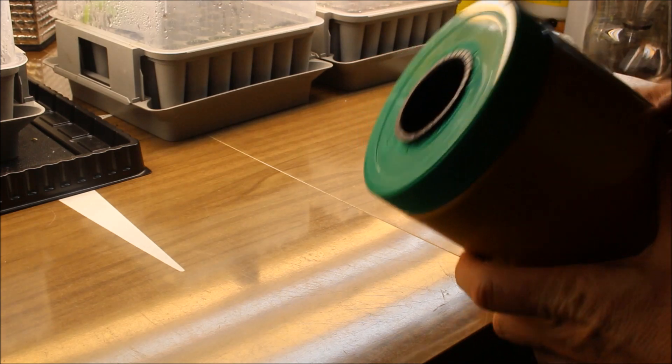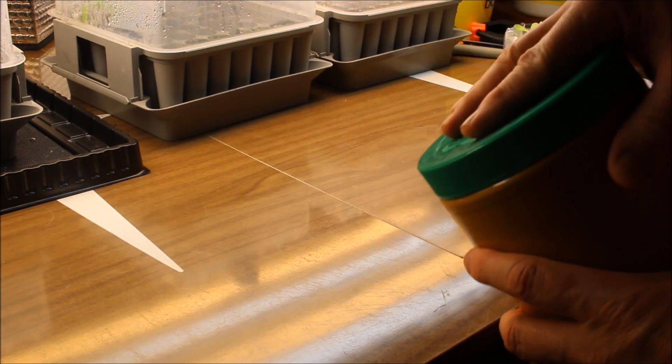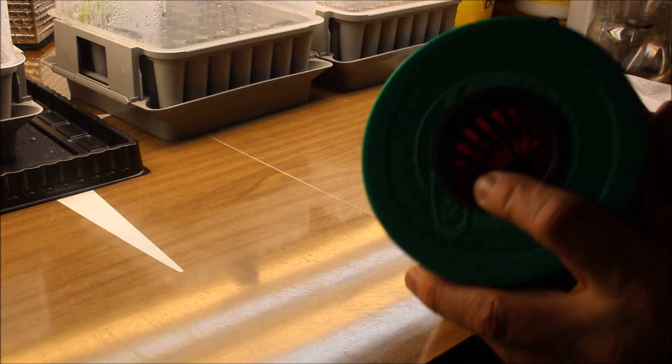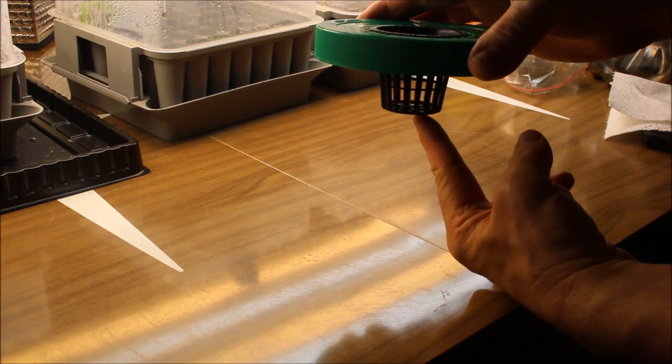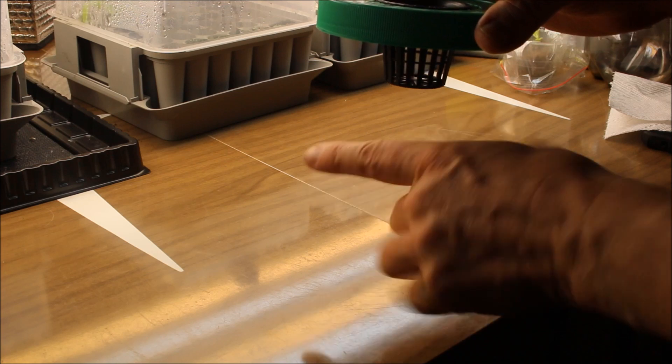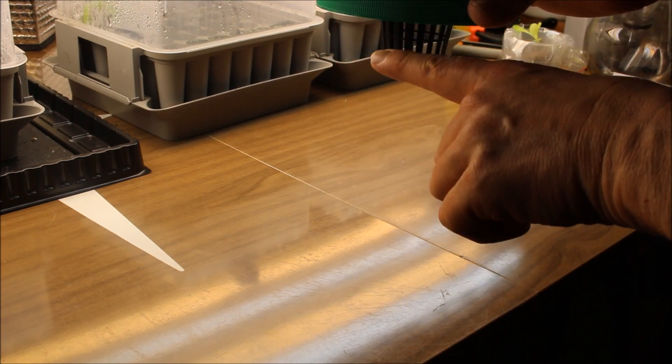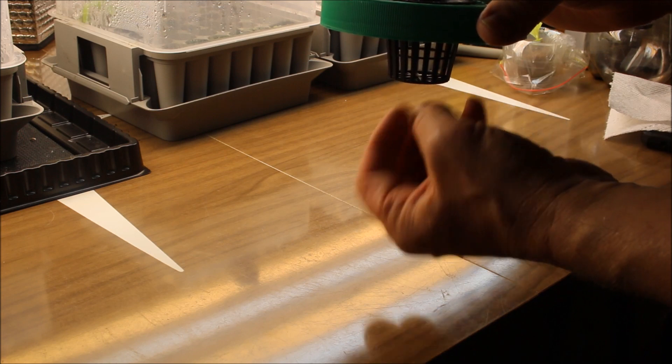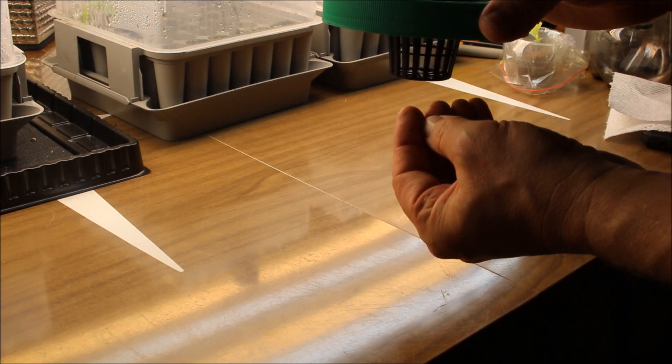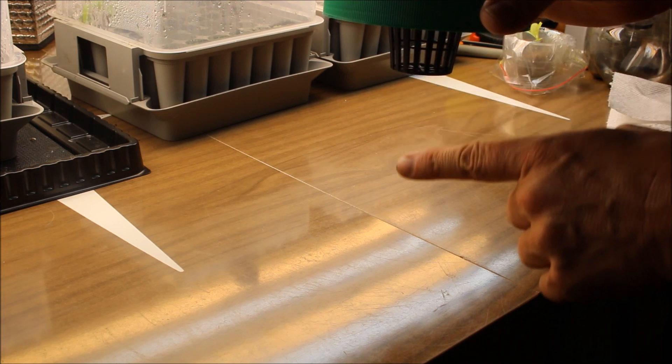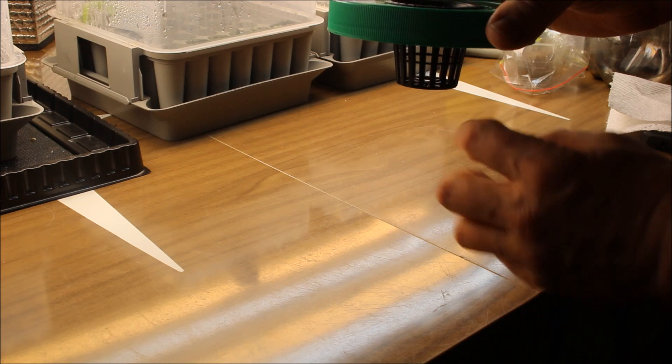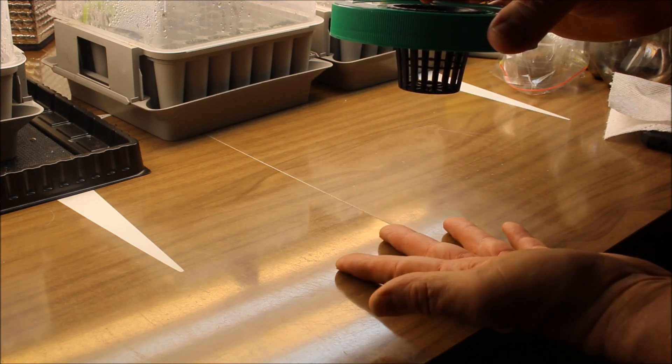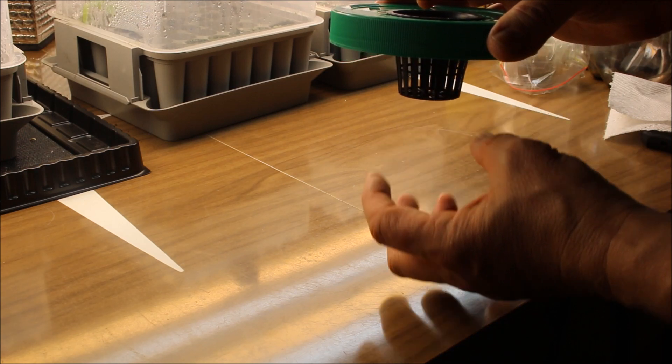Now if you've never heard of Kratky method before it's quite simple. The theory behind it is when you have your plant you fill up your reservoir to touch the bottom of the net cup. Now your level of water will be right here. Now as the plant grows it will start drying up the nutrient from the container. And as the nutrient level goes down the roots that become exposed from the water going down allows it to get the oxygen that it needs. So as the water goes down it gets more oxygen along the way.